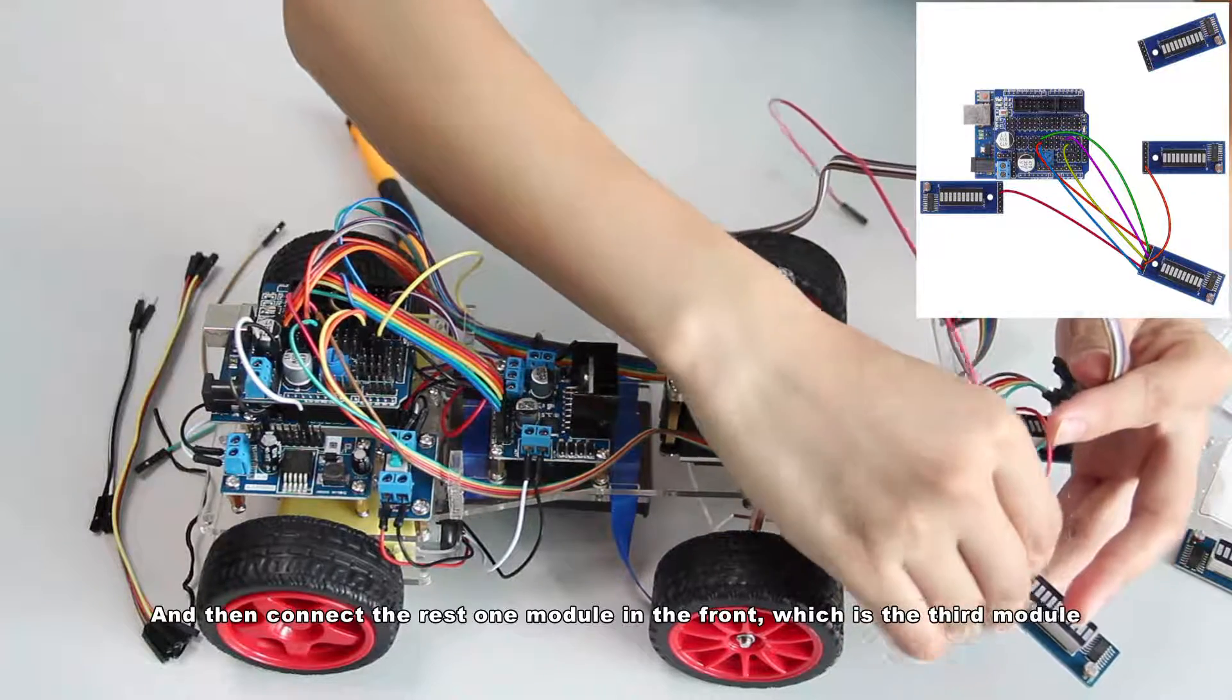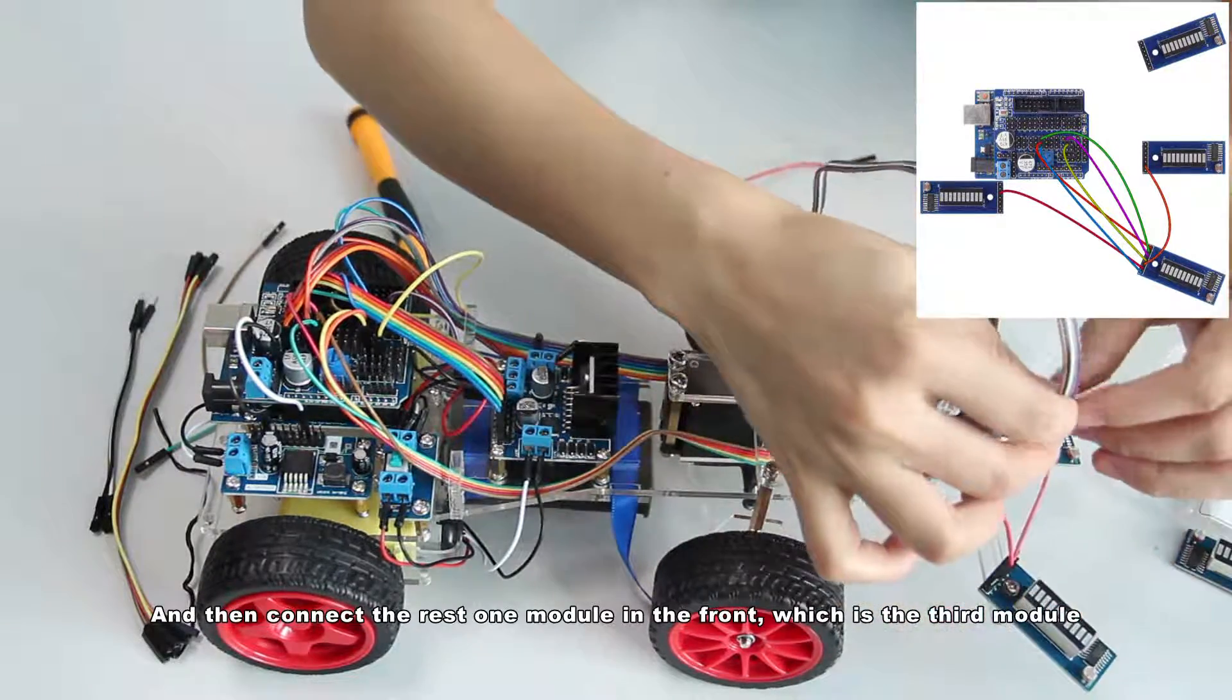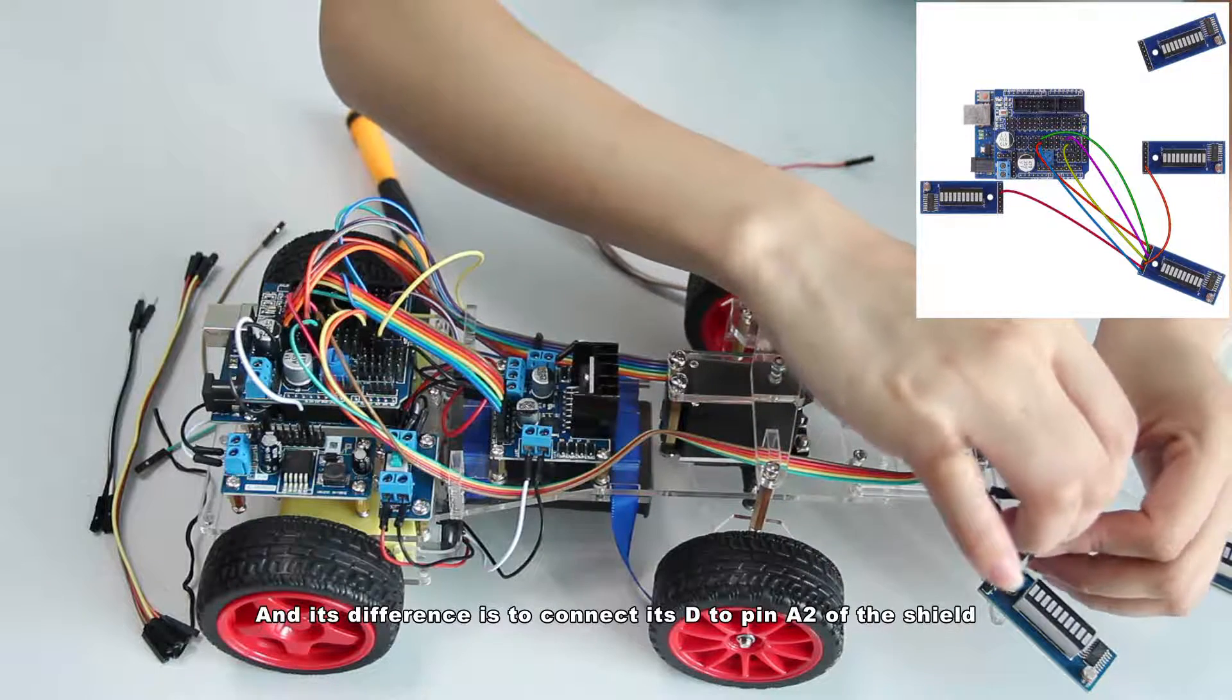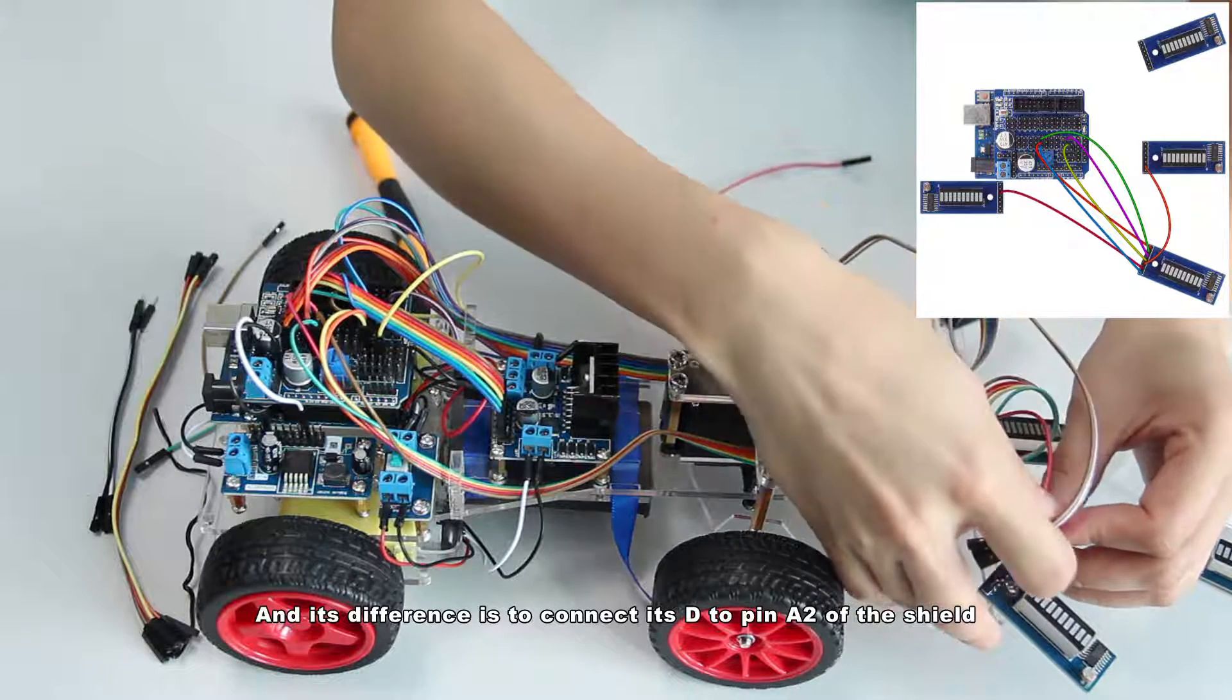And then connect the rest of one module in the front, which is the third module. And its difference is to connect its D to pin A2 of the shield.